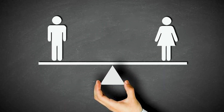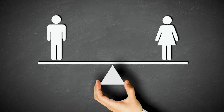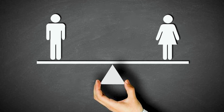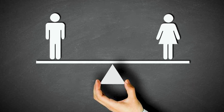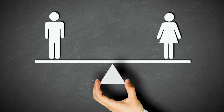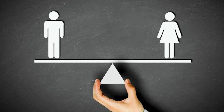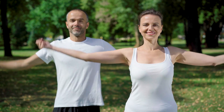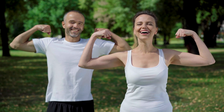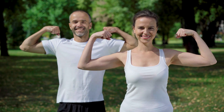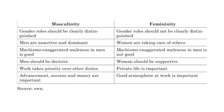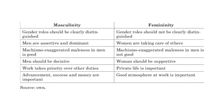The third dimension explores the degree to which a society perceives masculine values — such as assertiveness, competition, and material success — versus feminine values like nurturing, cooperation, and quality of life. This idea of masculinity and femininity in cultures does not refer to the gender or characteristics of an individual, but instead to the norms and values associated with different genders and expectations.